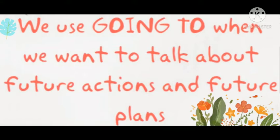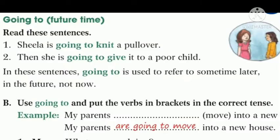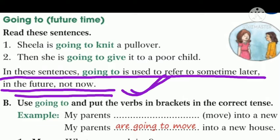Now just open your textbook where you have this exercise of GOING TO. In bracket, it is mentioned that it denotes future time. Read these sentences: Sheila is going to knit a pullover. Then she is going to give it to a poor child. So Sheila has a plan to knit a pullover and in future she wants to give that pullover to a poor child. Just concentrate on the next line. In these sentences, GOING TO is used to refer to sometime later in the future, not now.